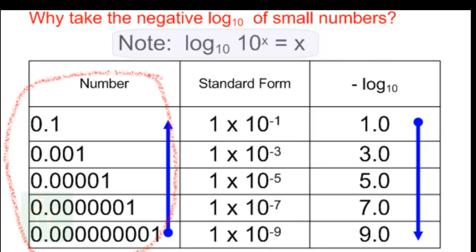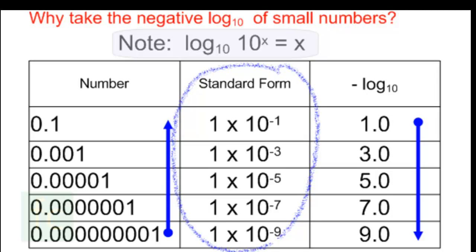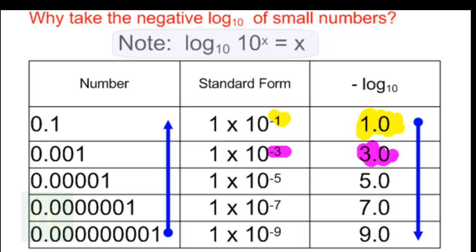In the left-hand column we have small numbers going from 0.1 down to 0.000000001, shown in standard form in the middle from 1×10⁻¹ down to 1×10⁻⁹. The log of 10⁻¹ is minus 1, so the negative log of 10⁻¹ is minus minus 1, which is 1. The log of 10⁻³ is minus 3, so its negative log is 3. And the negative log of 10⁻⁹ is 9.